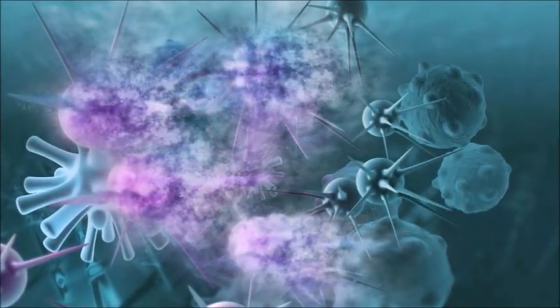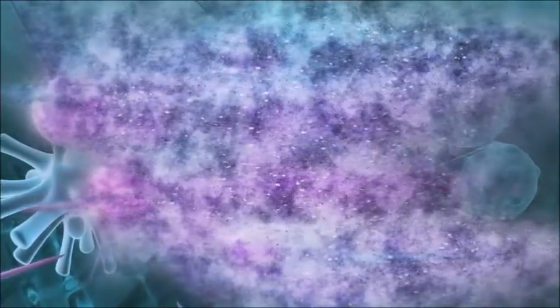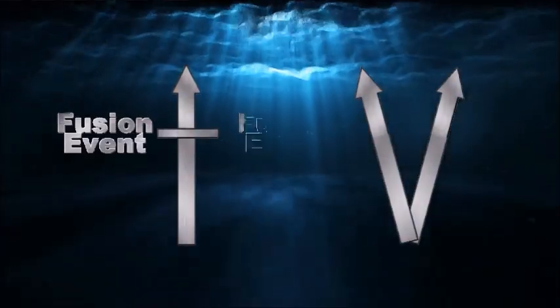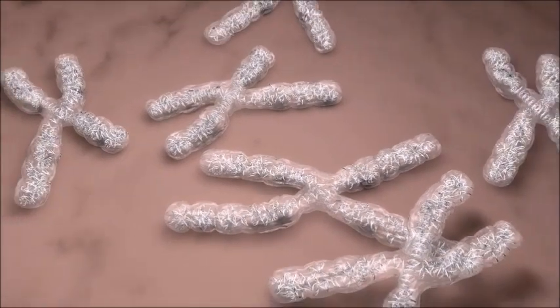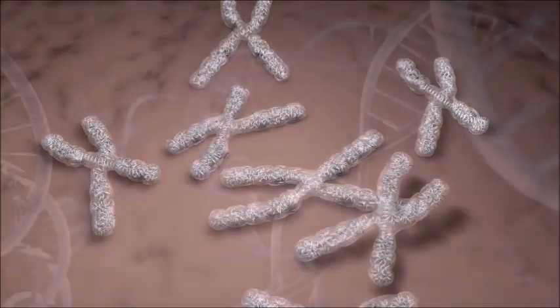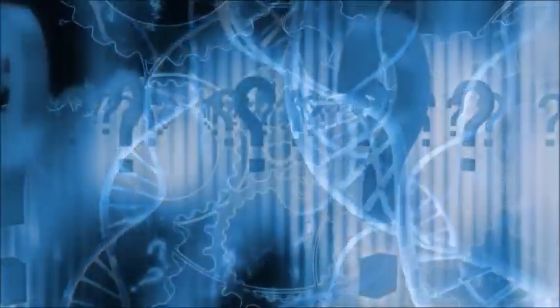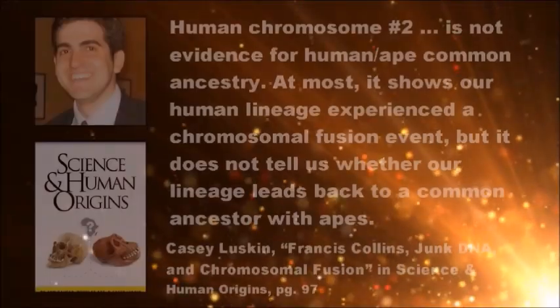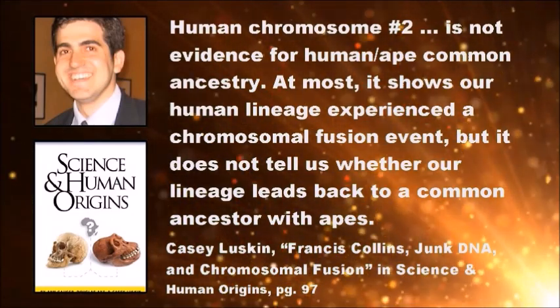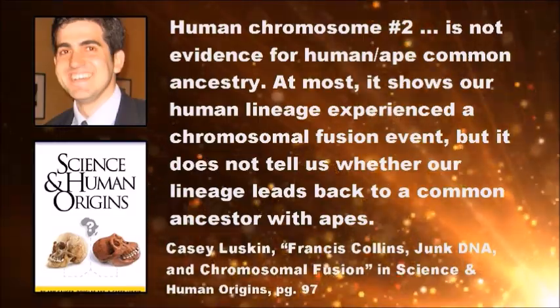Nonetheless, it is entirely possible that such a fusion event really did occur. But so what if it did? The event clearly happened after humans supposedly departed from their common ancestor, thus the fusion event itself tells us nothing since it is equally compatible with a monophyletic view of life as it is with a polyphyletic view. But if this fusion really happened, that means we once had the same number of chromosomes as chimps. Doesn't this indicate common ancestry? Not at all. As noted earlier, we share a substantial amount of DNA with chimps, so pointing out one other genetic similarity doesn't imply common descent. Why is it so inconceivable that a designer might design humans and chimps independently with the same number of chromosomes? This is a perfectly logical and rational position to hold. Casey Luskin sums this up well: Human chromosome number two is not evidence for human-ape common ancestry. At most, it shows our lineage experienced a chromosomal fusion event, but it does not tell us whether our lineage leads back to a common ancestor with apes.